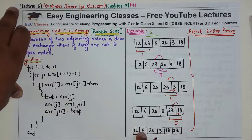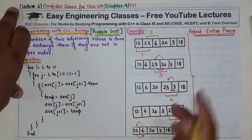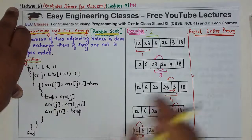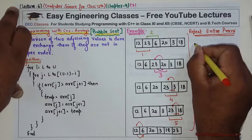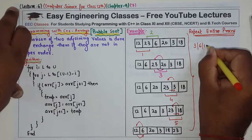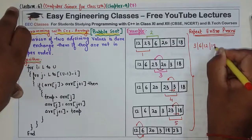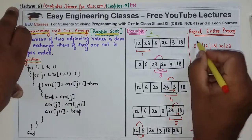12 and 6 should be interchanged, then 12 will be interchanged. When you go to the end, you will get a sorted array: 3, 6, 12, 18, 20, and 23.